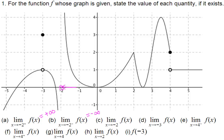Now it asks: what is the limit of the function when x approaches negative 2? We saw in parts a and b that from the right it's positive infinity and from the left it's negative infinity. Since they are not finite numbers and they do not match, the limit does not exist.